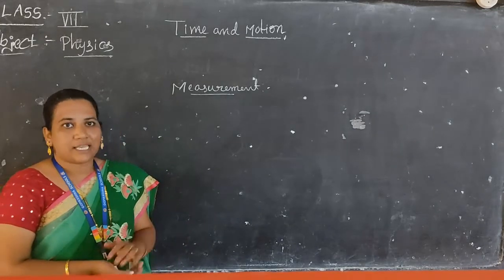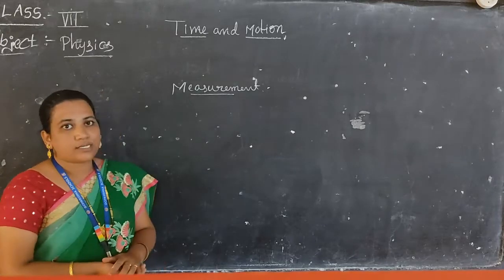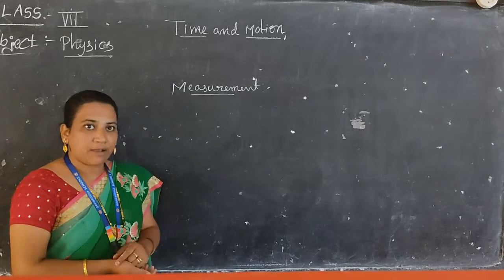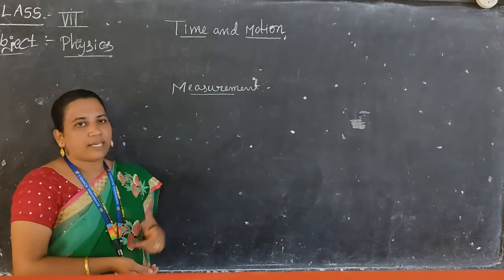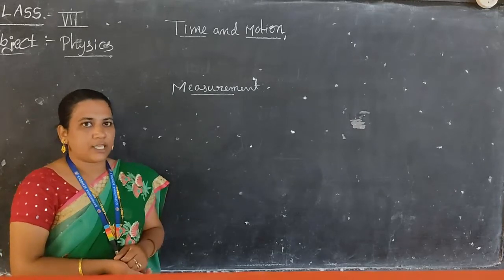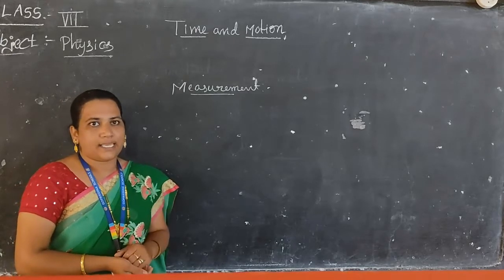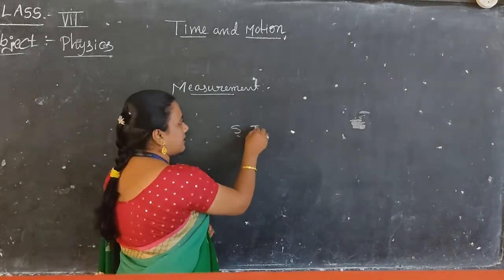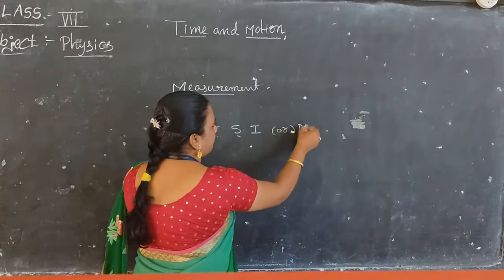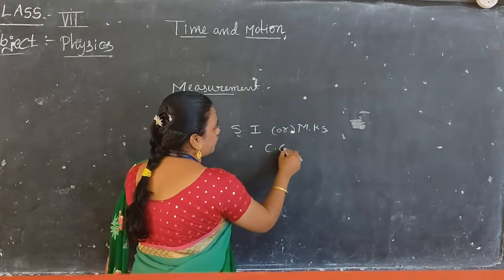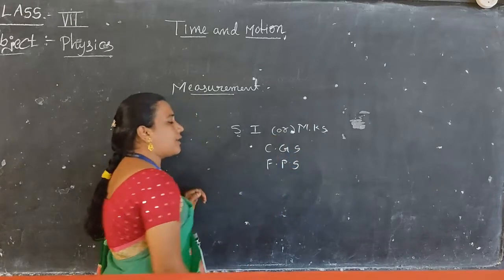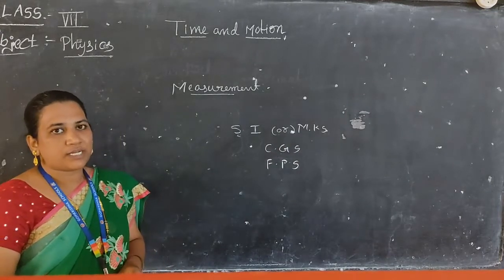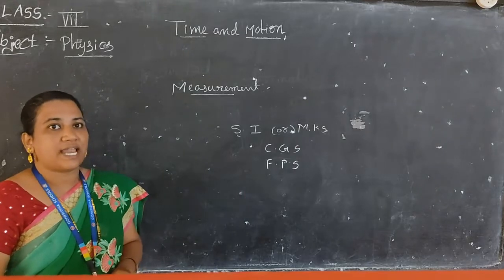Common standard measurements are SI units. In SI units, meters are used for length. For mass of an object and time of an event, we can measure with the help of SI units and get accurate readings. Along with that, the MKS system is also called the SI system of units. We also have the CGS units and FPS units. All these different systems of units are used to measure physical quantities and are called standard units.